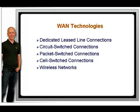Cell switching is similar to packet switching. The difference is that with packet-switched networks, the size of the unit of data being sent, called frames, is variable. Cell-switched units, called cells, are of a constant size. This makes dealing with heavy traffic loads easier and more efficient. Cell-switched solutions, such as ATM — Asynchronous Transfer Mode — tend to be big, fast, and robust.